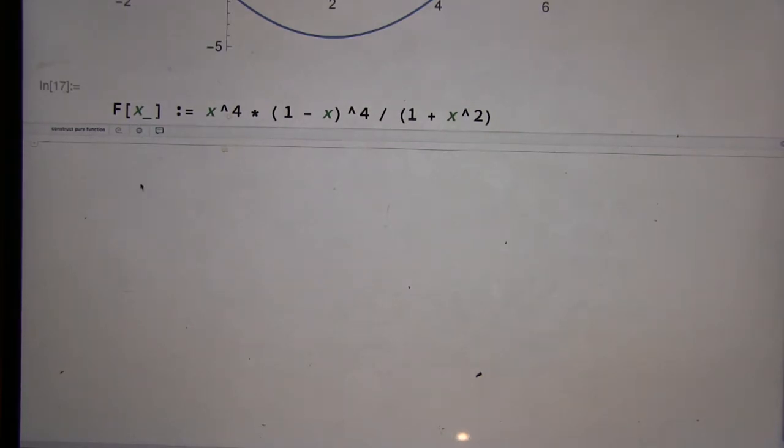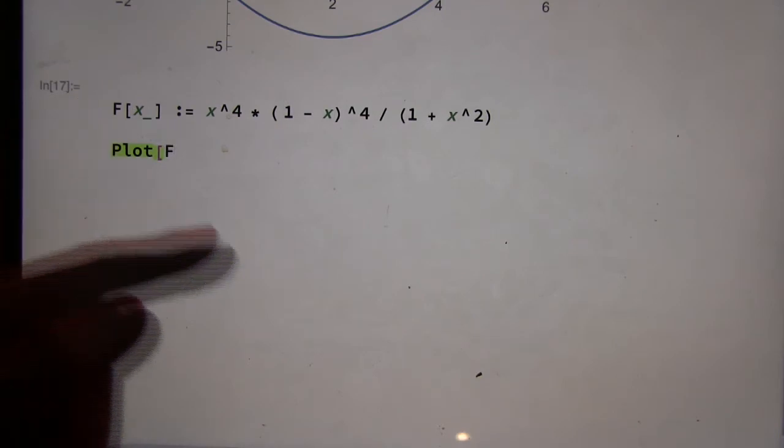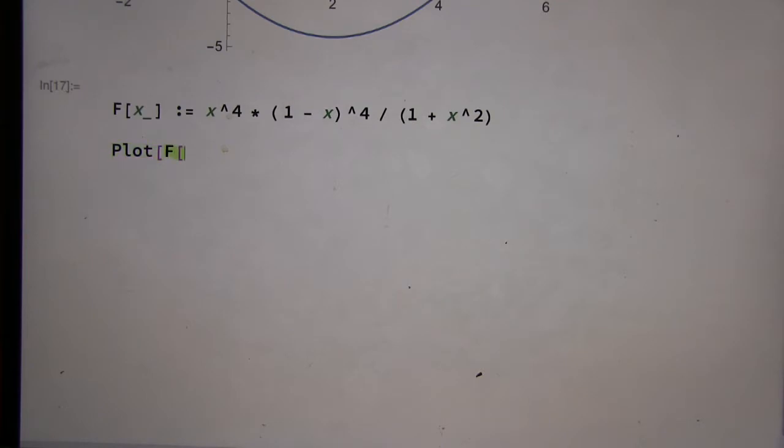So I want you to plot f of x, between zero and one. Is this just plot? Plot with a capital P. Plot. And then square brackets. Plot with a capital F. Yeah. Do you need f of x or just f? F of x. No, just regular x. Okay. Add comma. And then curly brackets up here. X comma zero one. But don't hit return yet. Curly brackets. And then square brackets. And then square brackets.